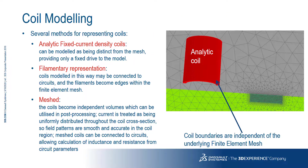In eddy current testing, the excitation of the problem will be by use of coils with, usually, an AC supply. In FEA, there are different ways of modeling coils, and which is most accurate and efficient can vary with the type of problem being solved. Firstly, we can use analytic representations of fixed current density coils. These are placed independent of the mesh; the conductors don't form part of the mesh in the solution, so models can be easier to define, but post-processing may be more challenging, requiring derivations from flux linkage calculations rather than utilizing readily accessible circuit parameters. Alternately, we can use a filamentary representation or fully mesh the coil.